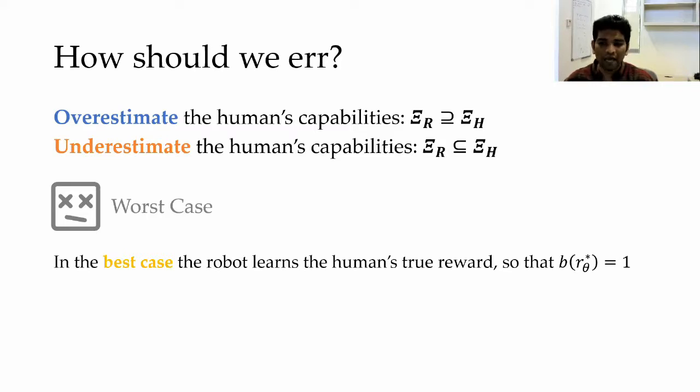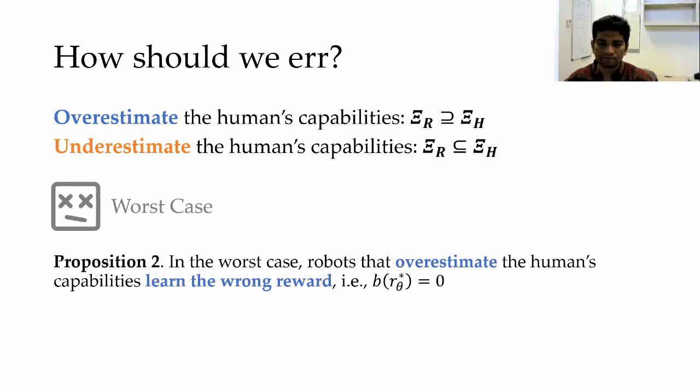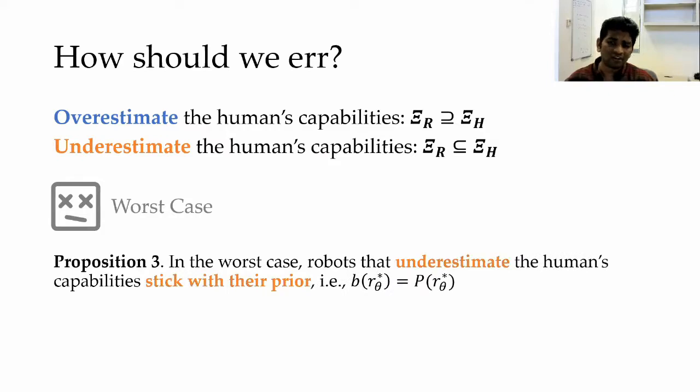Let's take a look at what happens in the best and worst case scenarios for either case. What we found was that in the best case scenario, both overestimating and underestimating lead to a robot learning not to spill coffee. However, in the worst case scenario, the robot that overestimates the human's capabilities will learn to spill coffee. While the robot that underestimates will simply stick to the prior, this would mean that the robot will not learn anything new from the demonstrations and will be confused about whether you want to spill coffee or not.